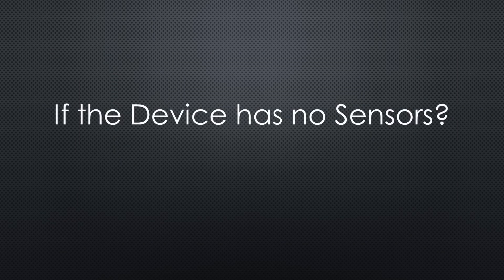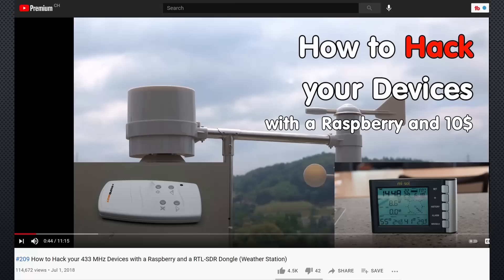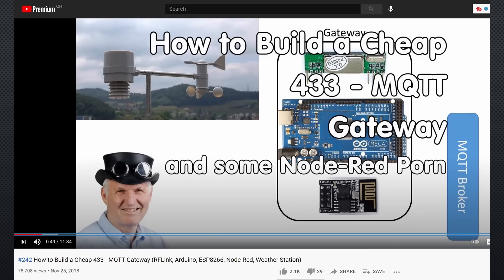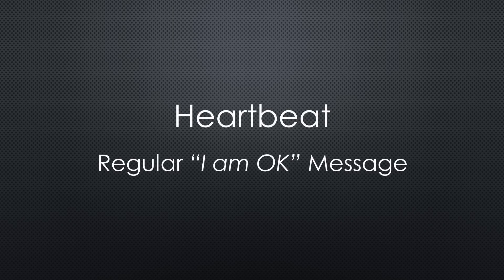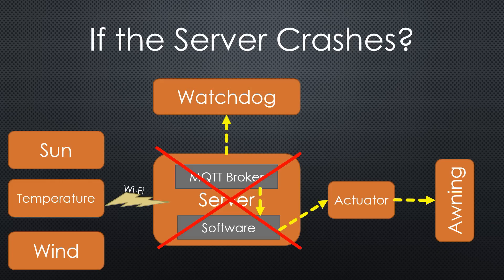But what if your device has no sensor or does not regularly deliver readings, like my awning which works on 433 MHz? Frequent viewers remember I hacked it in video number 209 and video number 242. Now it is controlled by an ESP, which does not create regular sensor readings. So I had to implement a heartbeat that every minute sends 'I am okay.' But what happens if the Raspberry crashes? If it crashes, it cannot send an alarm, so we need a second Raspberry that supervises the main Pi.